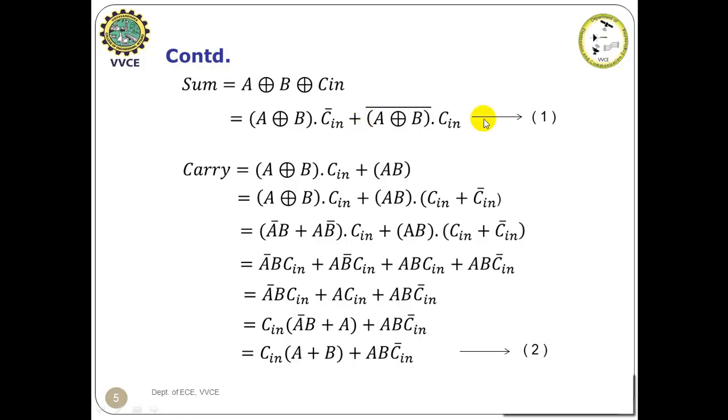We will concentrate on equation number one and equation number two. Suppose if Cin is equal to zero in equation one, the sum will be equal to A XOR B. That is with Cin equal zero, the output at the sum will be same as that of the XOR gate. And with Cin equal zero in the modified expression of carry, the carry will be equal to AB. That is the carry output will be same as that of the AND gate.